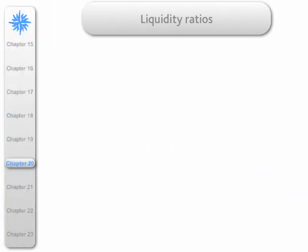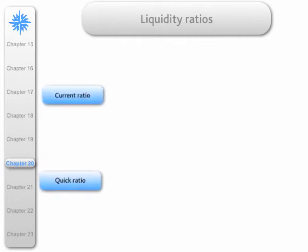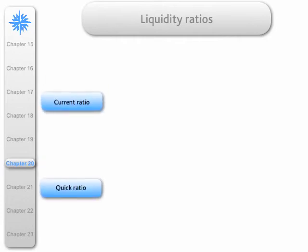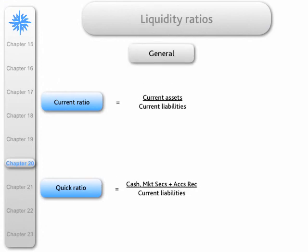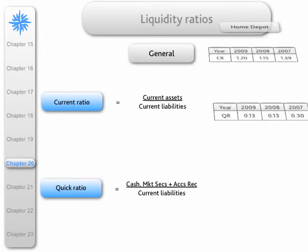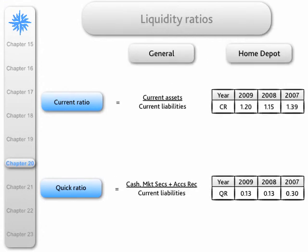Next, we have the liquidity ratios. We have two: the current ratio and the quick ratio. Here they are in general terms, and here they are in relation to Home Depot.